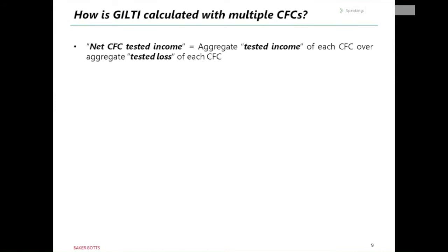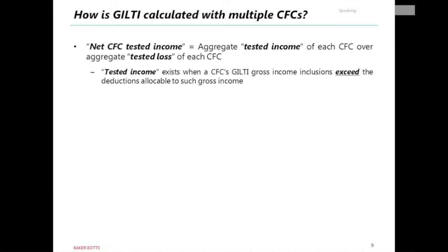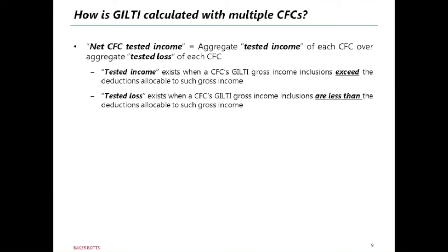When involving multiple CFCs, the net CFC tested income equals the aggregate tested income of each CFC over the aggregate tested loss of each CFC. Tested income exists when a CFC's GILTI gross income exceeds the deductions allocable to such gross income. Tested loss exists when a CFC's gross income inclusions are less than the deductions. These terms become more important in the aggregation concept as we get into more detail concerning GILTI.